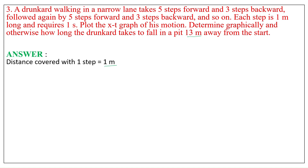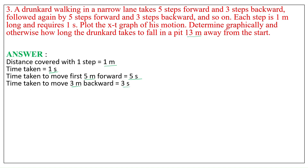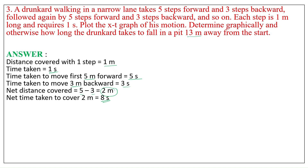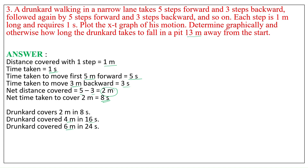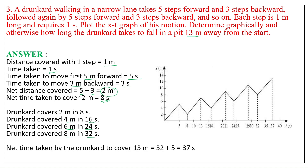Distance covered with 1 step is equal to 1 meter, time taken is 1 second. Time taken to move first 5 meters forward is 5 seconds. Time taken to move 3 meters backward is 3 seconds. Net distance covered is 5 minus 3 equals 2 meters. Net time taken to cover 2 meters is 8 seconds. So: 2 m in 8 s, 4 m in 16 s, 6 m in 24 s, 8 m in 32 s. In the next 5 seconds, the drunkard covers 5 more meters, reaching a total of 13 meters and falls into the pit. Net time taken is 32 plus 5 equals 37 seconds.